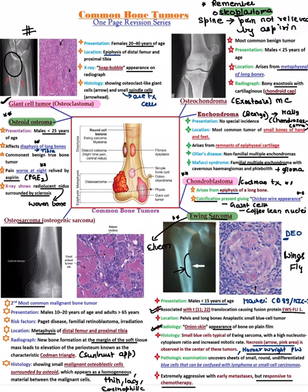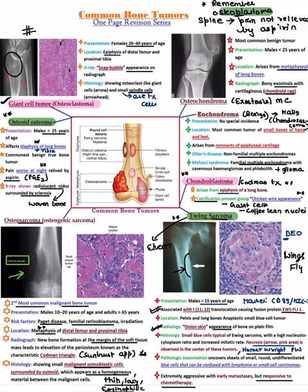Osteosarcoma is a malignant tumor — the second most common malignant tumor. It is associated with Paget's disease and familial retinoblastoma. It is located in the metaphysis. It lifts the periosteum, forming the Codman triangle. On histopathology, you see malignant osteoblastic cells surrounded by osteoid, which appears thin, lazy, and eosinophilic. It gives a sunburst appearance classically on radiograph.